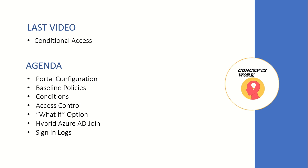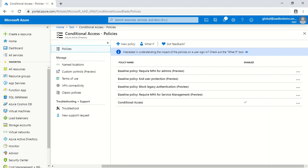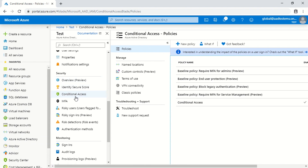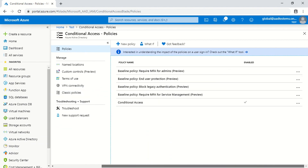The last thing I'll be talking about will be sign-in logs. Since this video will be majorly focused on portal configuration, I'll switch to my machine where I'm signed in on portal.azure.com. To get to conditional access, click on Azure Active Directory and then from the Security section select Conditional Access.